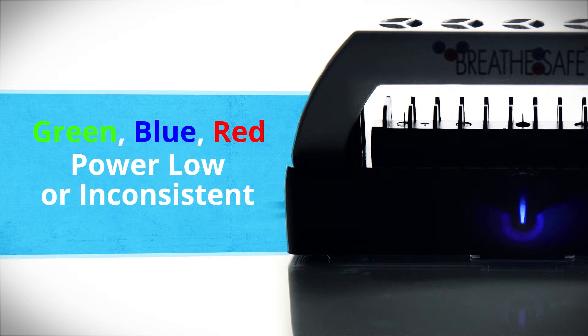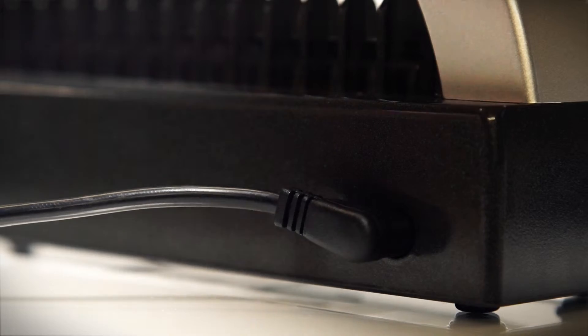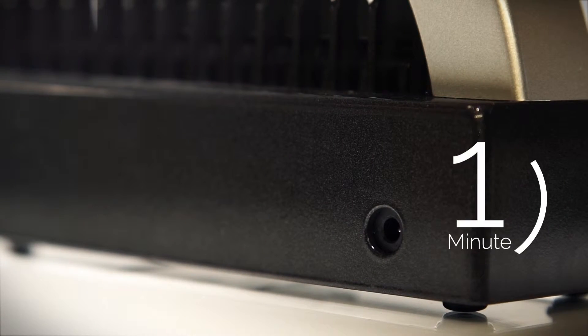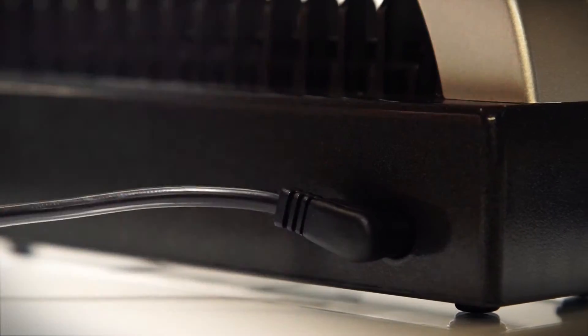If the power supply becomes inconsistent or low, the BreatheSafe will cycle between green, blue, and red. Unplug the BreatheSafe for one minute to reset, then firmly reconnect the power plug.